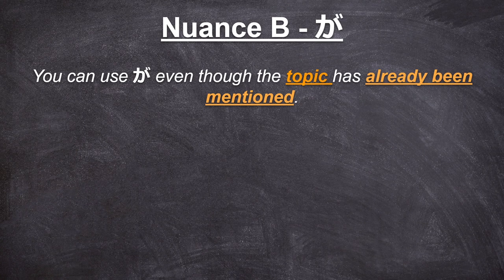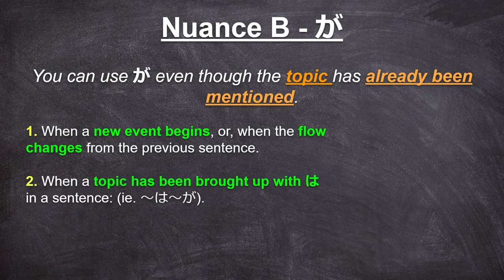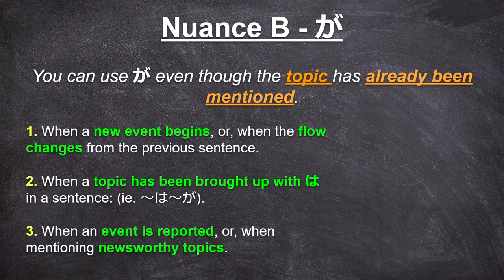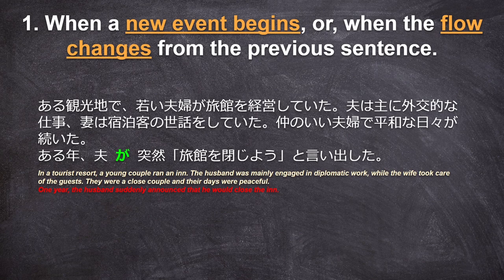Next is Nuance B. You can also use ga even though the topic has already been mentioned, but only sometimes. This is only possible when either: 1) a new event begins or when the flow changes from the previous sentence; 2) when a topic has been brought up with wa in a sentence — like something-something wa, then something-something ga; or 3) when an event is reported or when mentioning newsworthy topics. Let's look at number 1: when a new event begins or when the flow changes. I'm taking this sentence from the Shinkansen master book for N1 grammar: ある観光地で若い夫婦が旅館を経営していた。夫は主に外交的な仕事、妻は宿泊客の世話をしていた。